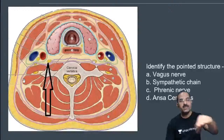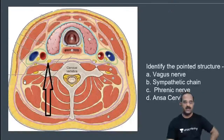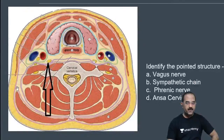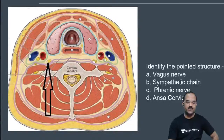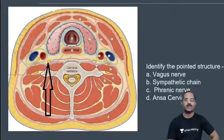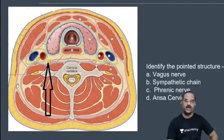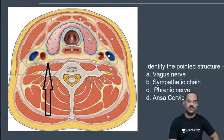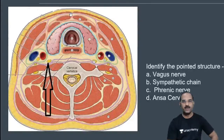The fascia which encloses the trapezius and the sternocleidomastoid — this is the investing layer of the deep cervical fascia. This investing layer forms the roof for the posterior triangle of the neck and also forms the roof for the anterior triangle.